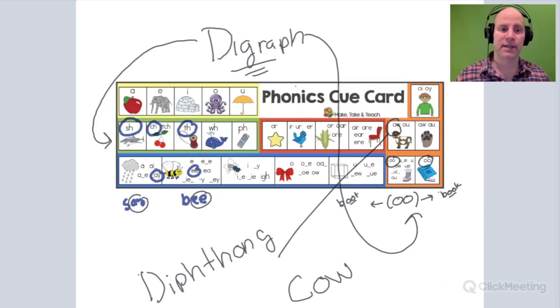Digraphs, there's no adjustment. Diphthongs, there is an adjustment. There's a blending of the sounds.